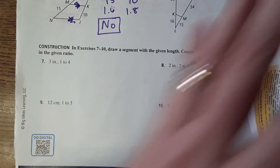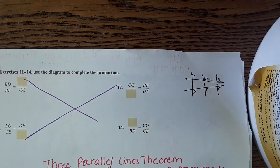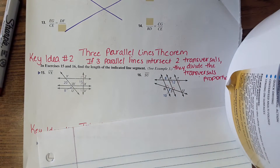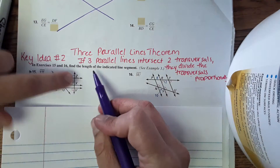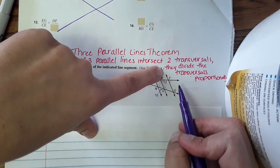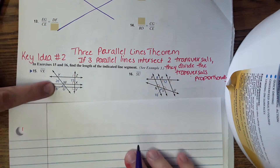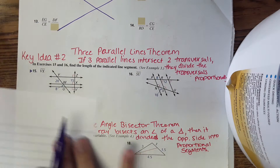On the back, we're not going to do the first four problems — you can cross those out. We do have a new key idea here: key idea number two, the Three Parallel Lines Theorem. If three parallel lines intersect two transversals, they divide the transversals proportionally. Pause here to write that down, then we'll try it out with the examples.